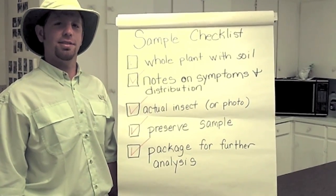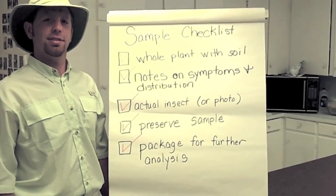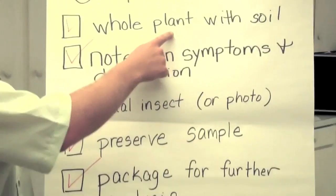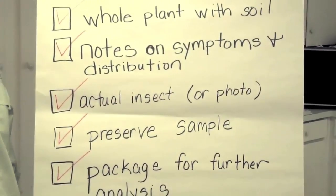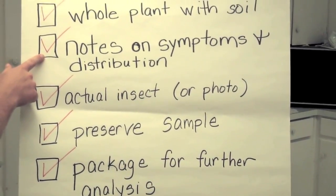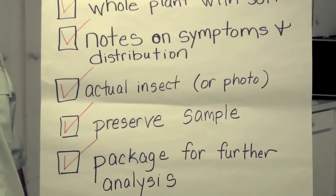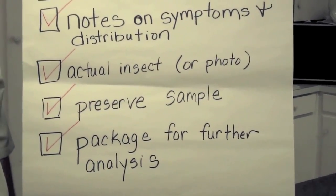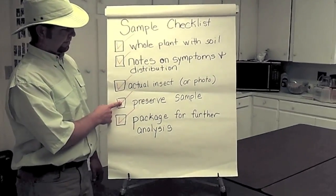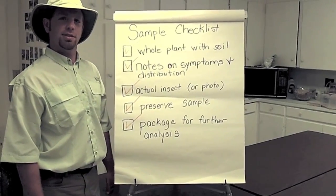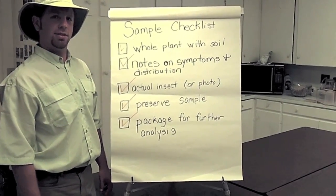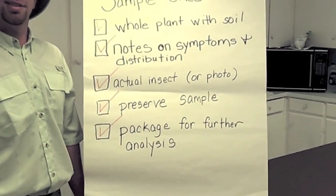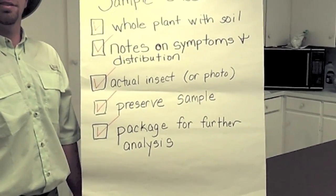In conclusion, in preparing an insect or disease sample for your agent to properly evaluate, remember to get a whole plant with soil if appropriate. Take notes on the symptoms and distribution of the problem in your field. If appropriate, remember to get an actual insect or a photo of the one that's bothering you. Preserve your sample by making sure it's not exposed to extremes in temperature. And if necessary, we'll package your sample for further analysis by the appropriate lab.